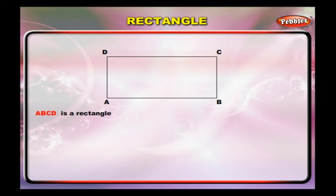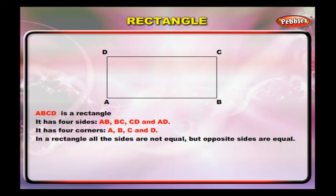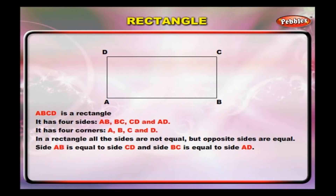Rectangle ABCD is a rectangle. It has four sides: AB, BC, CD, and AD. It has four corners: A, B, C, and D. In a rectangle, all the sides are not equal, but opposite sides are equal. Side AB is equal to side CD, and side BC is equal to side AD.